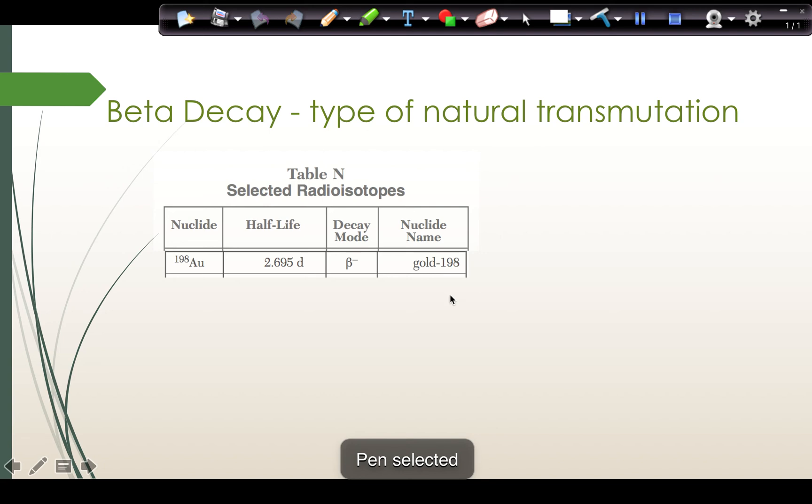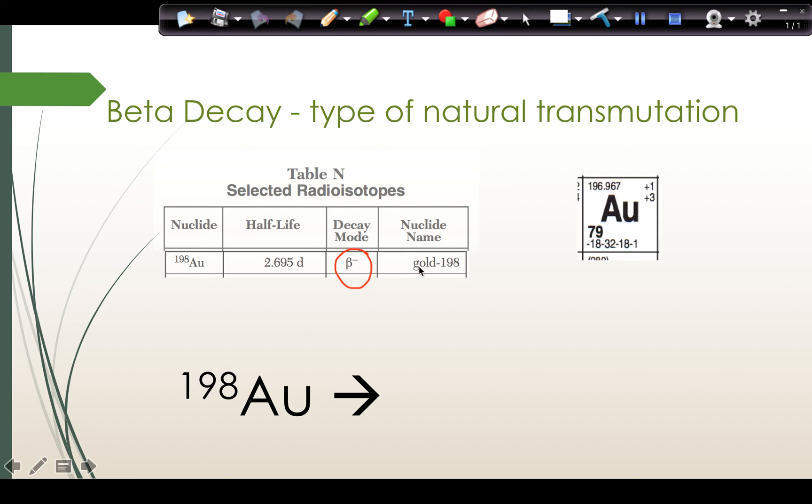For beta decay, for example, gold 198 has a B minus as its decay mode. So that means it undergoes beta decay. If I want to write the equation for the decay of gold 198, I write the symbol for gold with a mass number of 198. I look on the periodic table for gold's atomic number and fill it in there. My arrow is an equal sign. My first product after the arrow will be the notation for beta particle. I can do 0 over minus 1e or 0 over minus 1 beta. I usually prefer 0 over minus 1e.